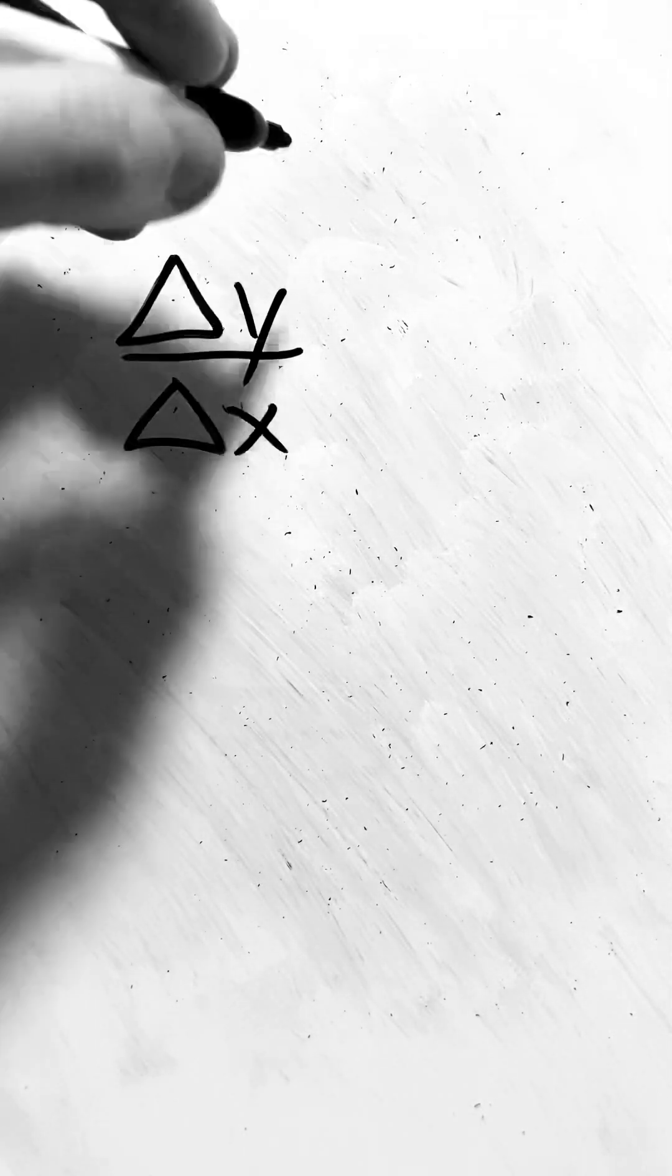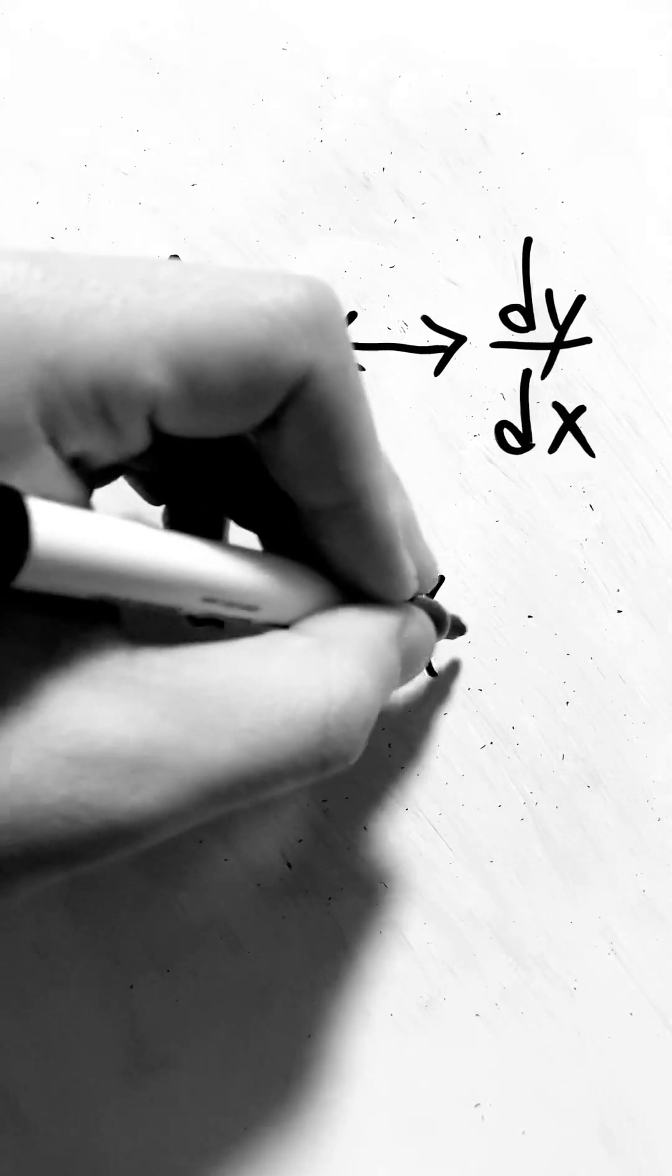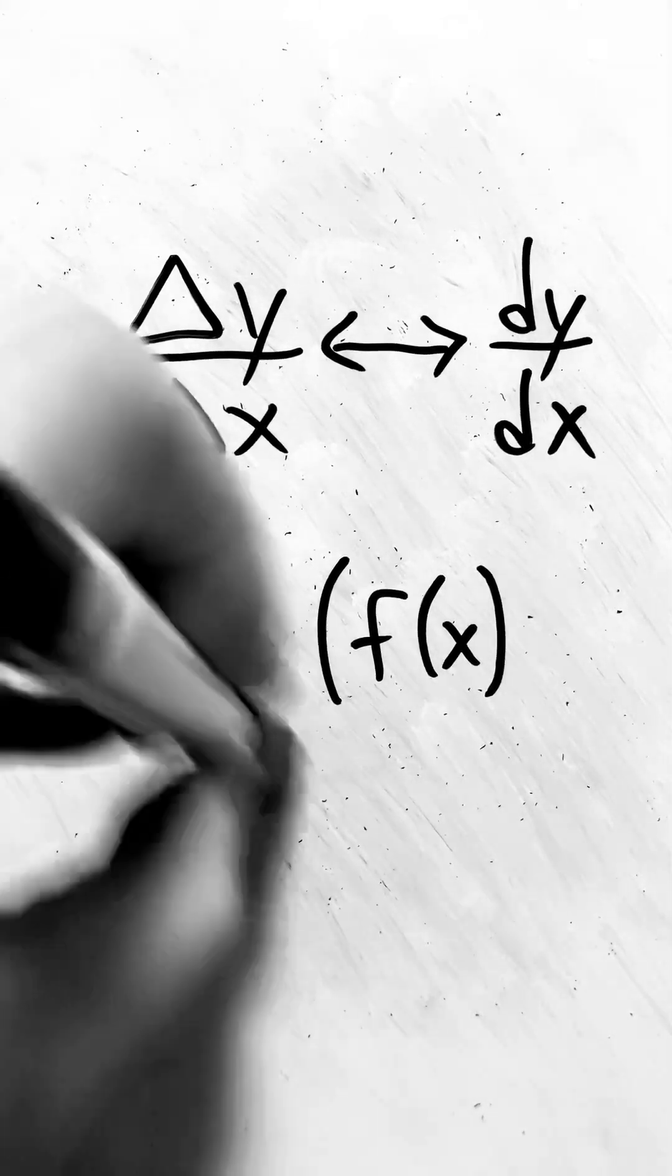Now, delta y over delta x is analogous to saying dy over dx, or d over dx times f of x. Ignore the fact that I forgot a parentheses there. In fact, there's a lot of different ways that you can represent this change.